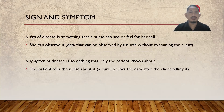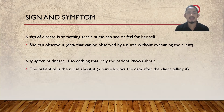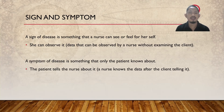Sign and Symptom. Talking about signs of disease, it means that we are talking about something that a nurse can see or feel. The nurse can observe it — the data can be observed by a nurse without examining the client. Talking about symptom of disease, it means that this is something that only the patient knows about. The patient tells the nurse about it; the nurse knows the data after the client has explained it.